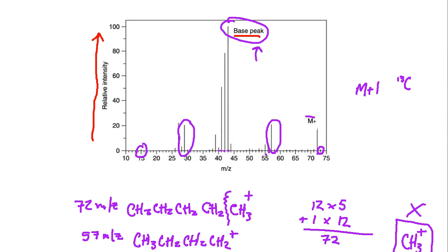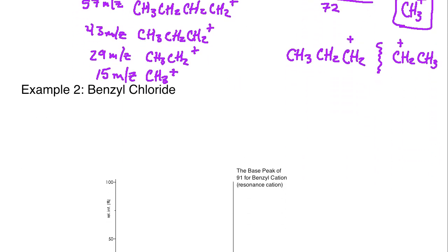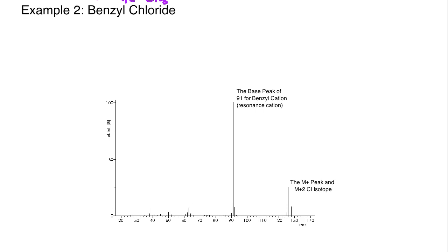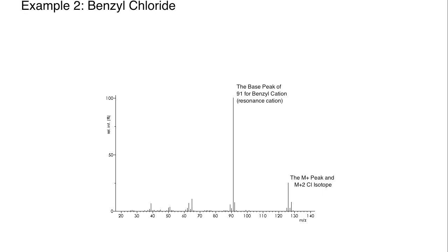I'm going to be a little bit shorter with this one, but benzyl chloride. There's two things I want to highlight here. The first one is that we've got the M+ peak, and you can see the M+2 chlorine isotope for benzyl chloride. If I were to draw benzyl chloride, it's an aromatic ring, a benzene ring, and it's got a CH2 group here and then a chlorine coming off of it.